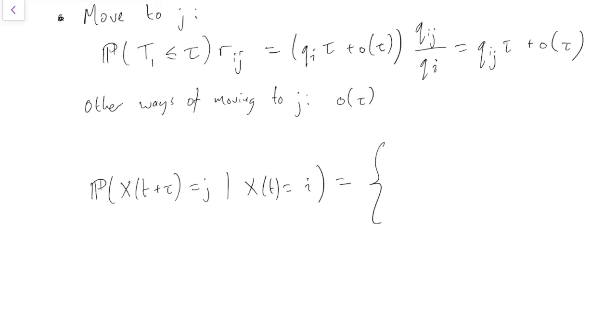If i equals j, then that's the probability we stay where we are, which we saw was 1 - qi*tau + o(tau).